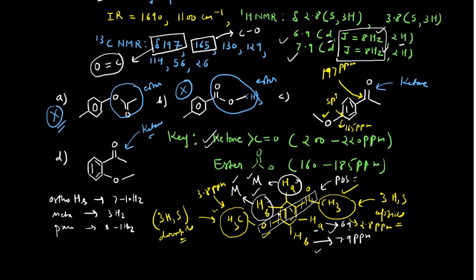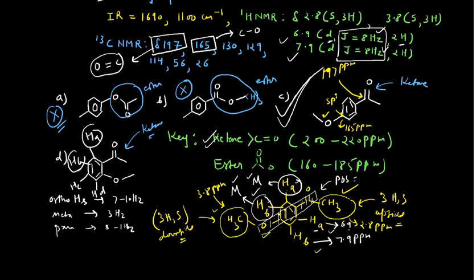On the basis of these spectral studies, option C is the correct answer. Note that option D's molecule does not have a plane of symmetry, so it would have four different aromatic hydrogens (HA, HB, HC, HD) with ortho, meta, and para couplings producing a complex splitting pattern — but the spectrum shows only doublets. Therefore the most probable structure is option C.